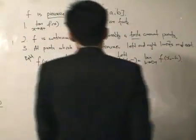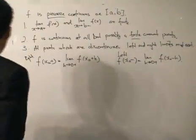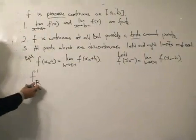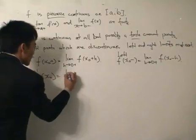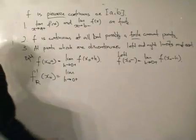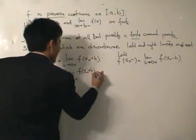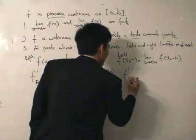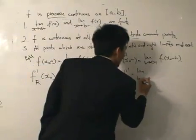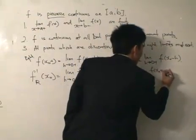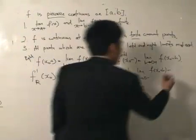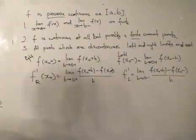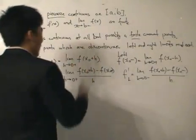We also need the definitions of the left and right derivatives. The right derivative, written as f'_r(x₀), equals the limit as h tends toward zero from the positive side of [f(x₀ + h) − f(x₀)] / h. The left derivative is similar, but h tends toward zero from the negative side of [f(x₀ + h) − f(x₀)] / h. These are the definitions of left and right limits and left and right derivatives.